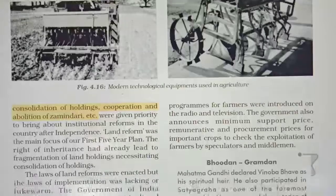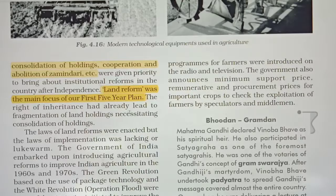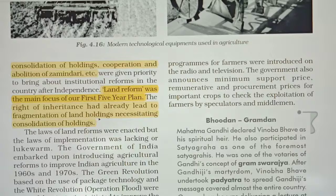Land is divided again and again due to fragmentation. Land reform was the main focus of our first five-year plan. The right of inheritance has already led to fragmentation of land holdings — land gets divided with each generation — causing the productivity of land to decrease. So land reform was the first main focus of the first five-year plan. Laws of land reform were enacted, but implementation was lacking and lukewarm.